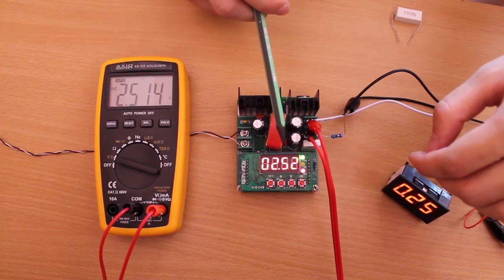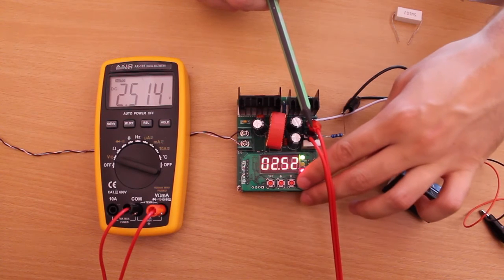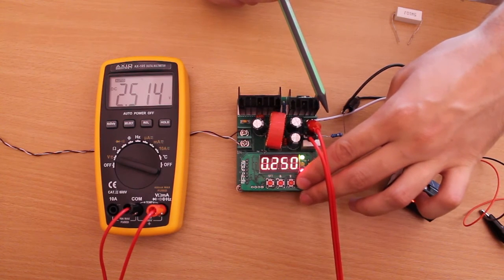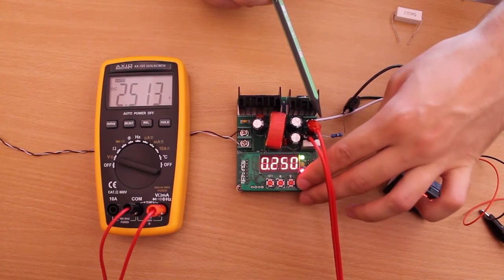On the display, you can switch between voltage and current by pressing OK.